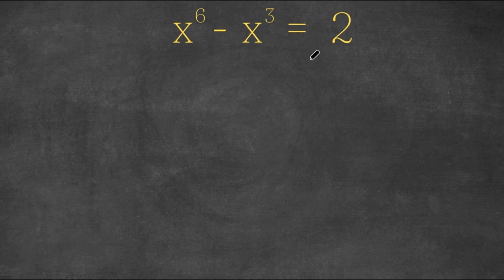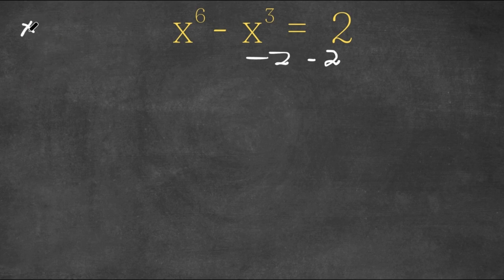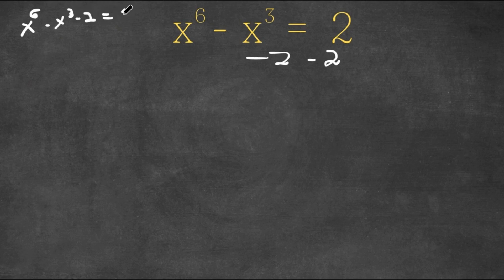Now what I'm first going to do is I'm going to subtract 2 on both sides. So now we have x to the power of 6 minus x to the power of 3 minus 2 is equal to 0.